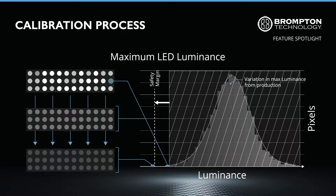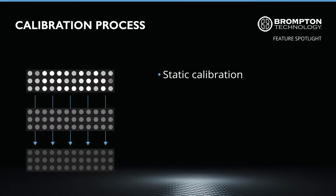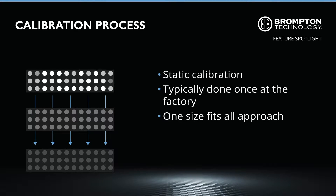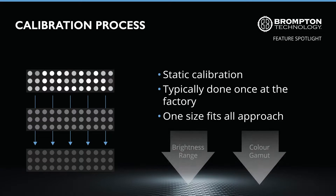The brightness cap is lowered even further as a safety margin for future production variation. Any calibration done this way is static, meaning it doesn't change once made. It is typically done at the factory, with a one-size-fits-all approach, for all possible users, environments, types of content, and LED pixels. But the reality is that one size does not fit all. Calibration done this way severely limits both the brightness range and colour gamut of an LED panel.